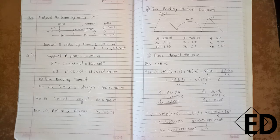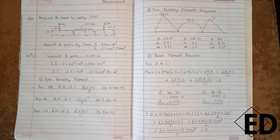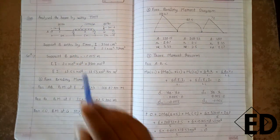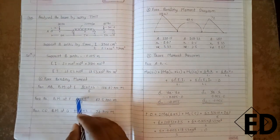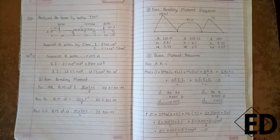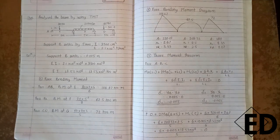A similar procedure is done for spans BC and CD. For span BC with UDL, the free bending moment is wL²/8, where w is the load in kN/m and L is the length — giving 62.5 kN·m. For the point load on span CD, using Pab/L gives 72 kN·m. This completes the first step.